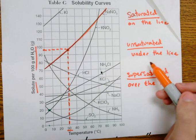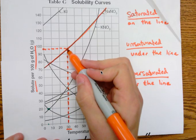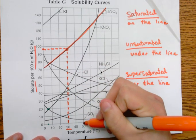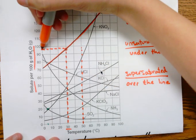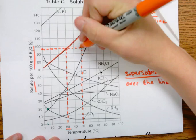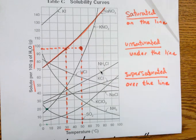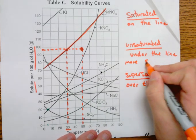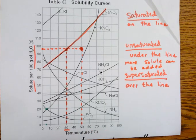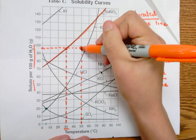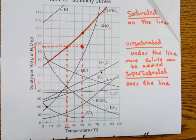An unsaturated solution will have a point that's under the line you're comparing it to. Let's say I have that same 97 grams of solute and heat the solution up to 50 degrees. Going straight up to 50 degrees and straight over from 97 grams, that point is no longer on the line. This means I can add more solute and it will dissolve — about 18 more grams can be added before it becomes saturated, going from 97 up to about 115 grams.